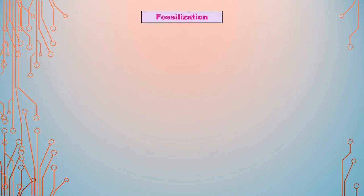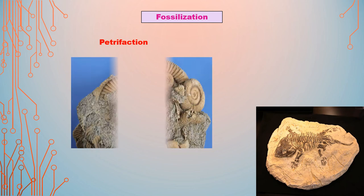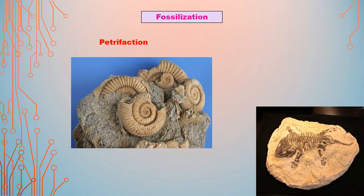Next topic: fossilization. The process of fossilization creates a rock-like structure from an organism. Common methods include petrification, mold and cast, carbonization, preservation, compression, and infiltration. First: petrification. Minerals and silica in the sand penetrate inside the organism, replacing the original organic tissue and forming a rock-like structure. This method can preserve both hard and soft parts of the organism. Most bones and wood fossils are petrified by this method.